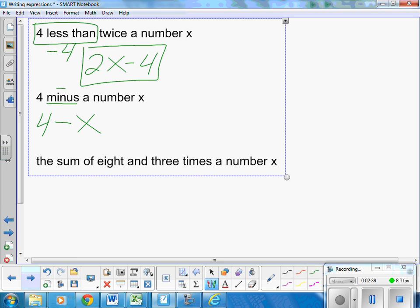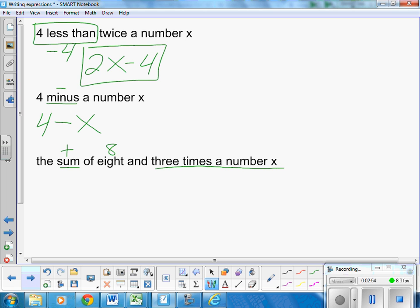The sum of 8 and 3 times a number. The sum, you have to know that that is adding. Of 8 and 3 times a number. 3 times a number x. That's 3x. So I'm going to add 8 and 3x. So I'm going to go 3x plus 8. If you have it the other way around, that is also correct. Hopefully, Khan accepts it that way.